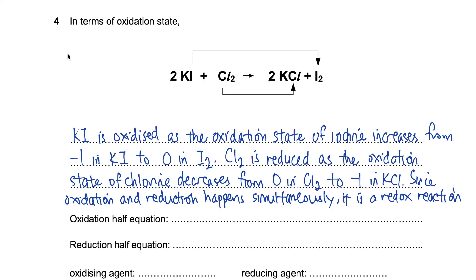The last example requires us to look at oxidation states. Before we begin, we have to assign oxidation numbers to all the elements. K+, I-, these are ions, element 0, K+, Cl-, element 0. KI is being oxidized as the oxidation state of iodine increases from minus 1 in KI to 0 in I2. Cl2 is reduced as the oxidation state of chlorine decreases from 0 in Cl2 to minus 1 in KCl. Since oxidation and reduction happens simultaneously, it is a redox reaction.